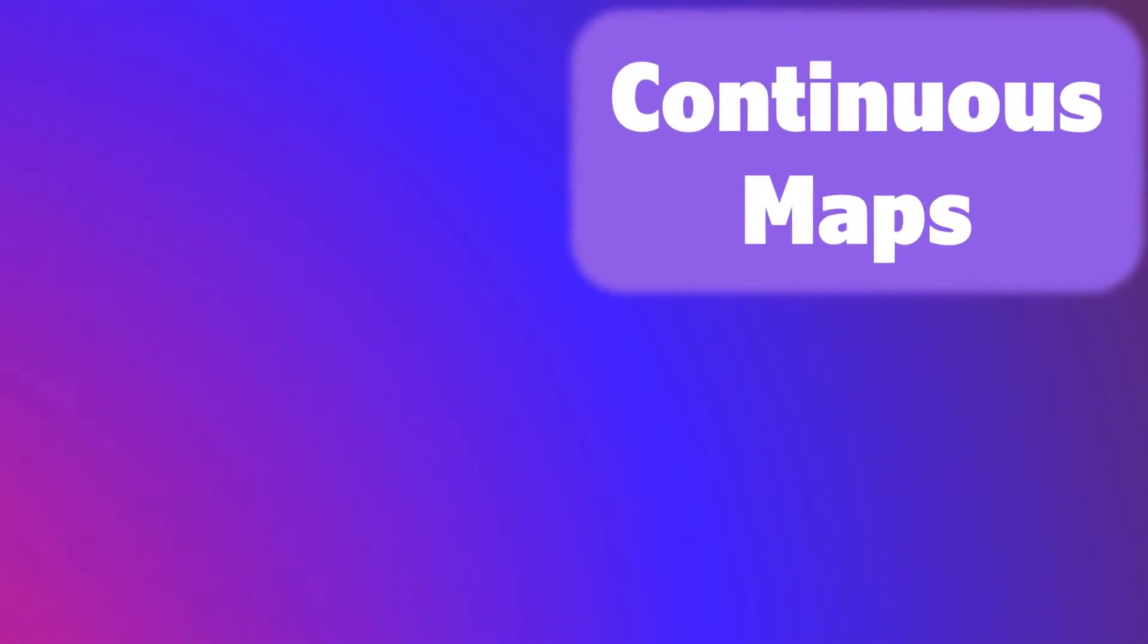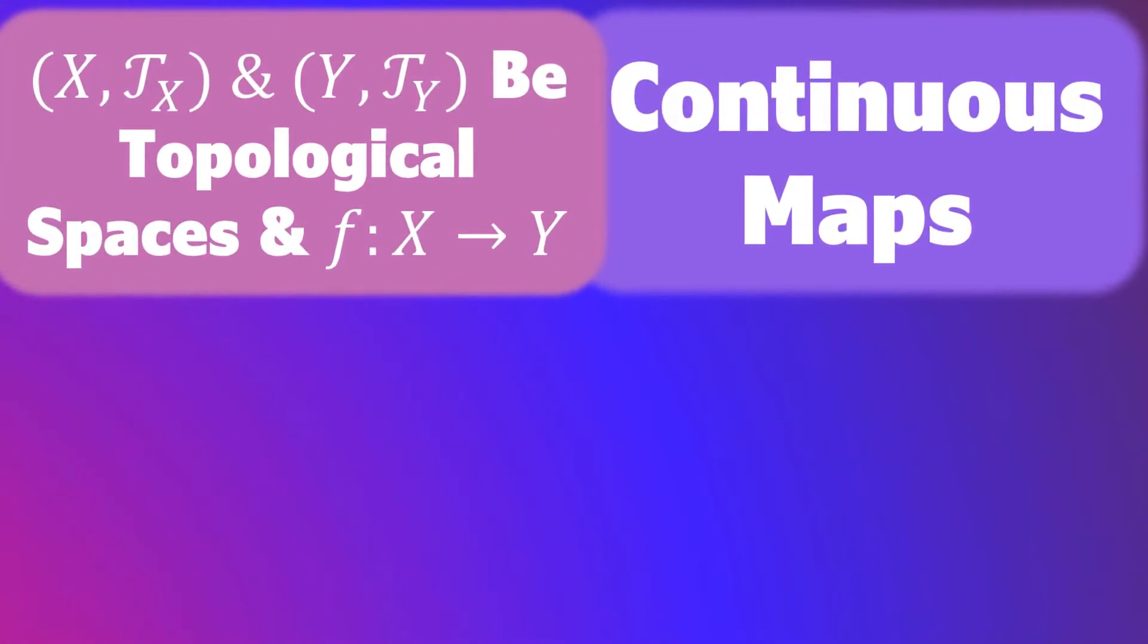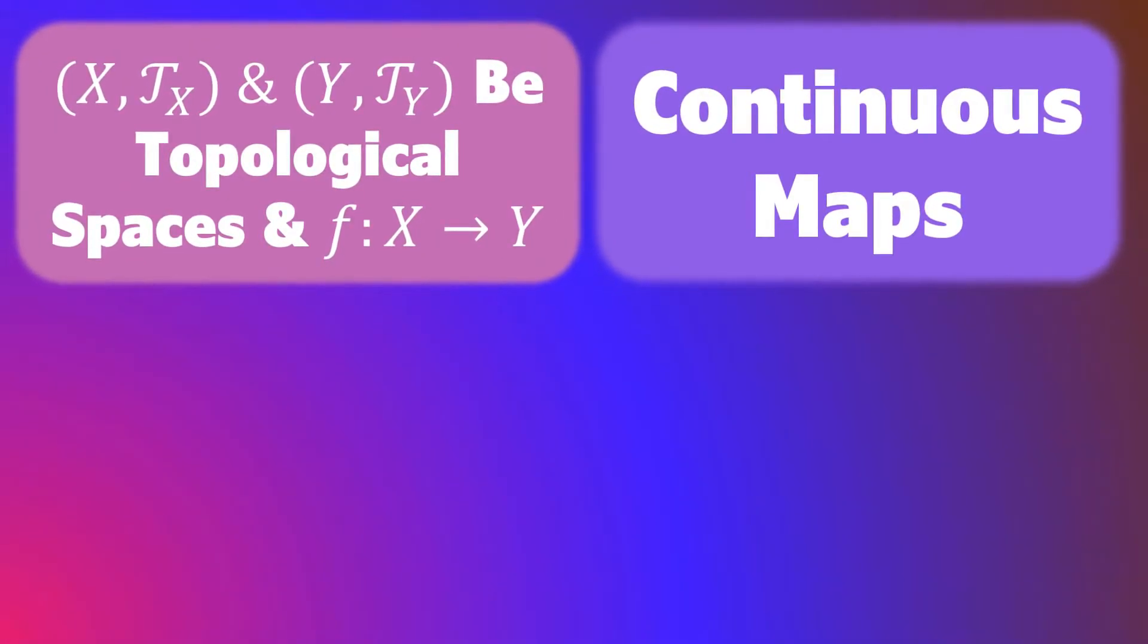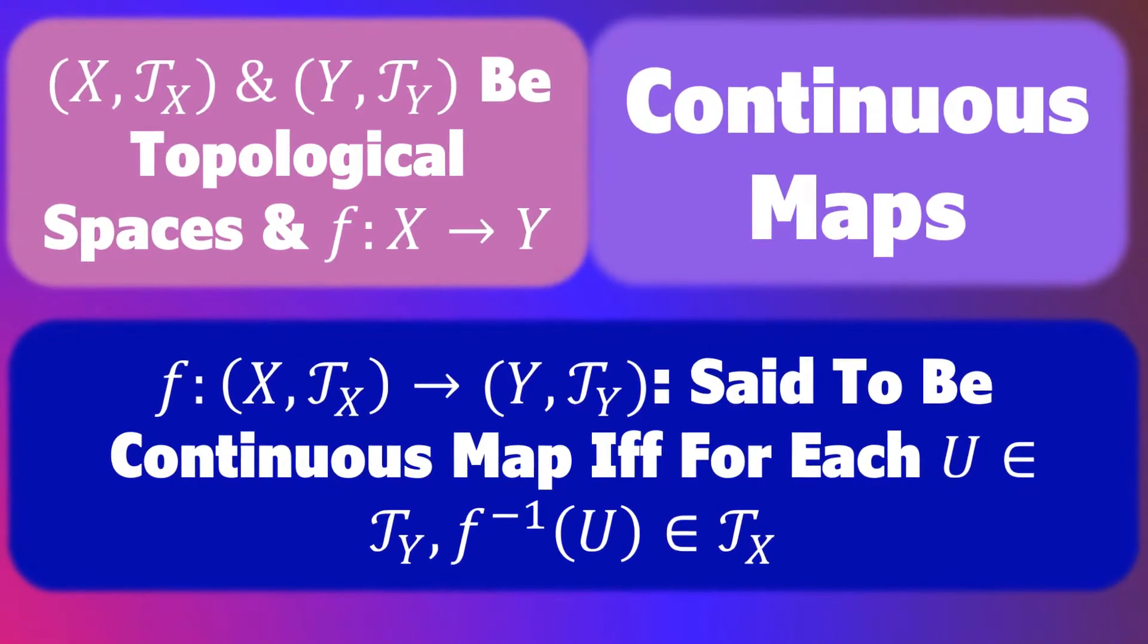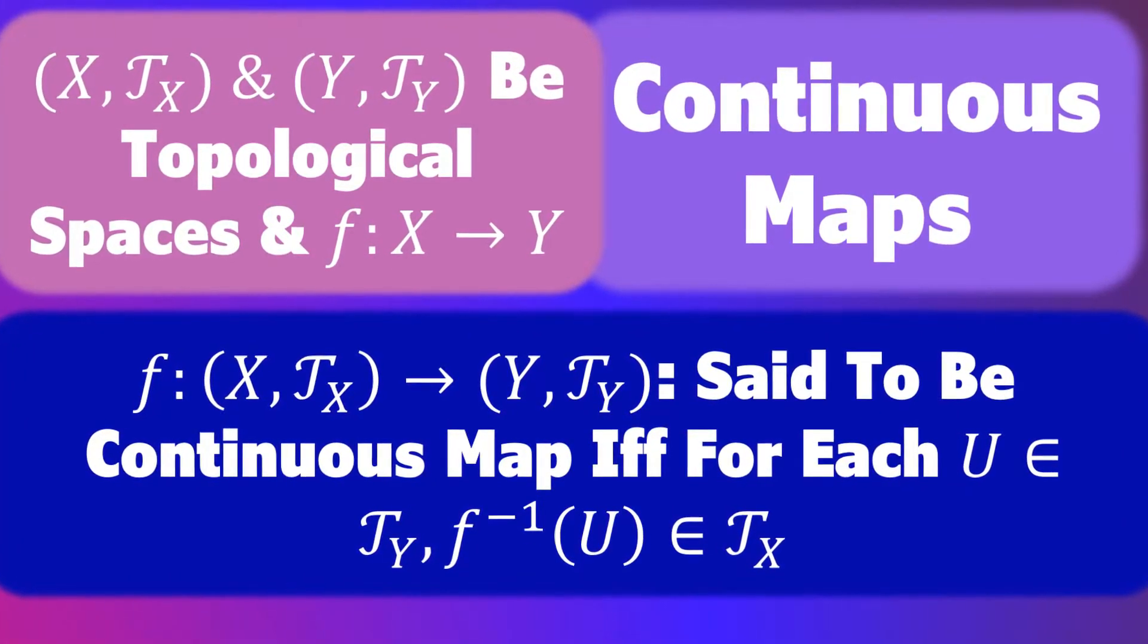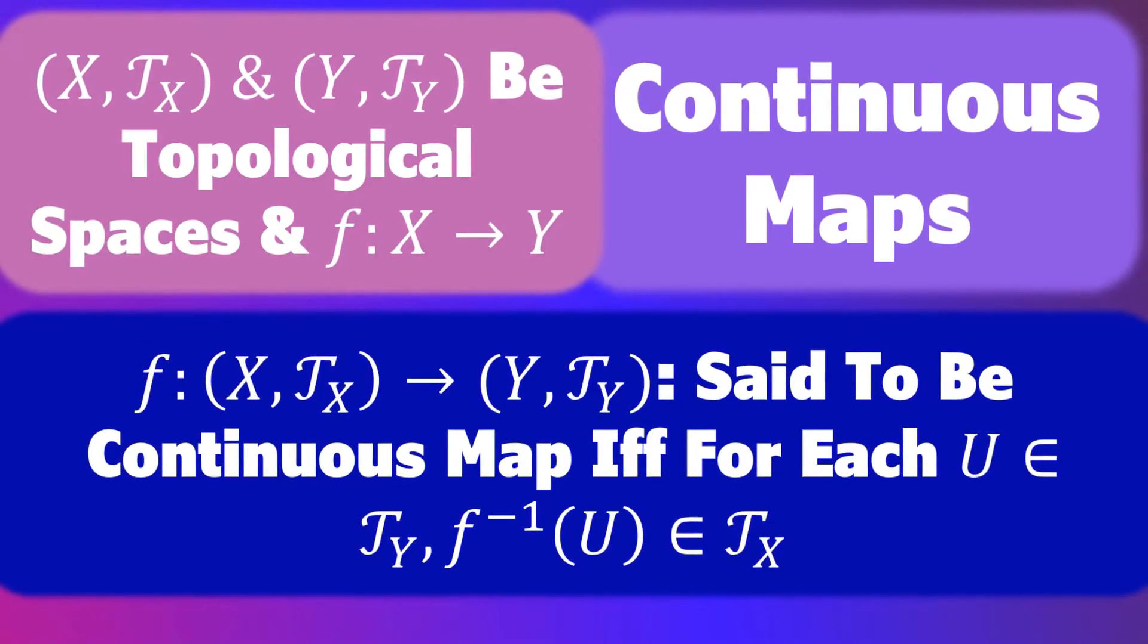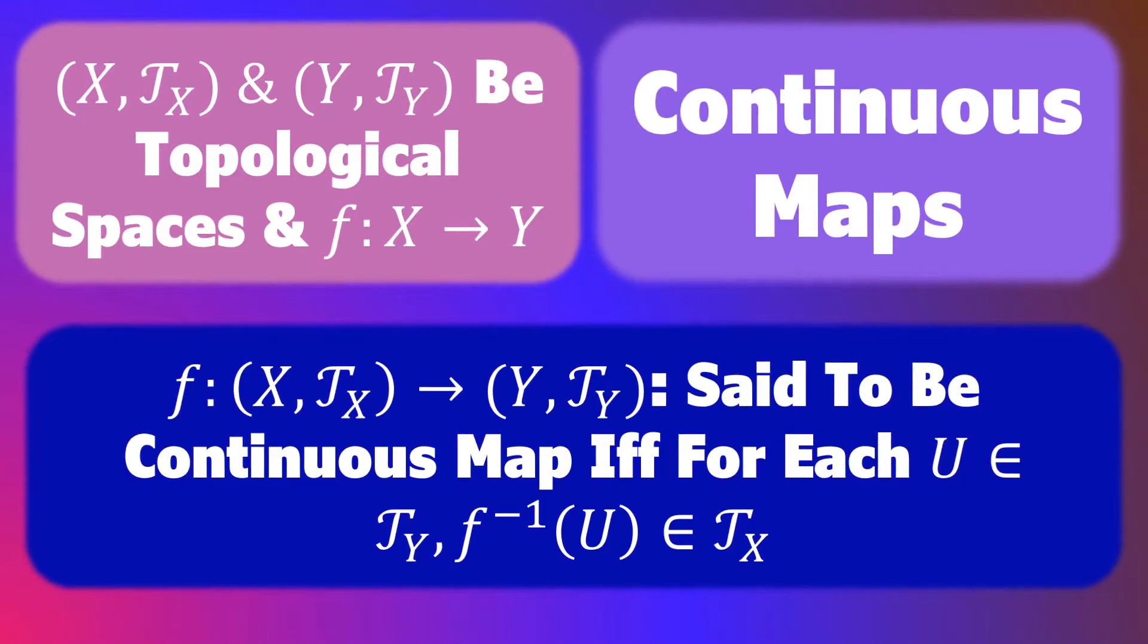Now, let's move on to defining continuous maps. Let (X, Tₓ) and (Y, Tᵧ) be topological spaces and f a function from X to Y. Then, f: (X, Tₓ) → (Y, Tᵧ) is said to be continuous if and only if for every U in Tᵧ, the inverse image of U is in Tₓ.